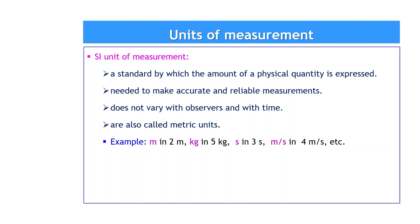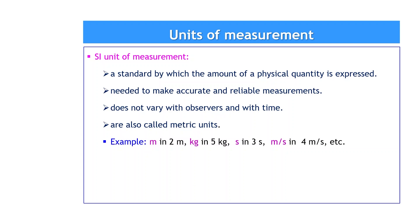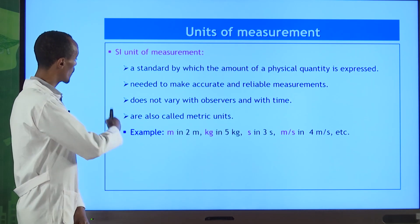We need the system of international units, which is invariable and constant everywhere — internationally the same. SI units are needed to make accurate and reliable measurements. If I measure length using my elbow it differs from another person's measurement of the same object, because it varies and is not reliable. To avoid this, we use SI units.